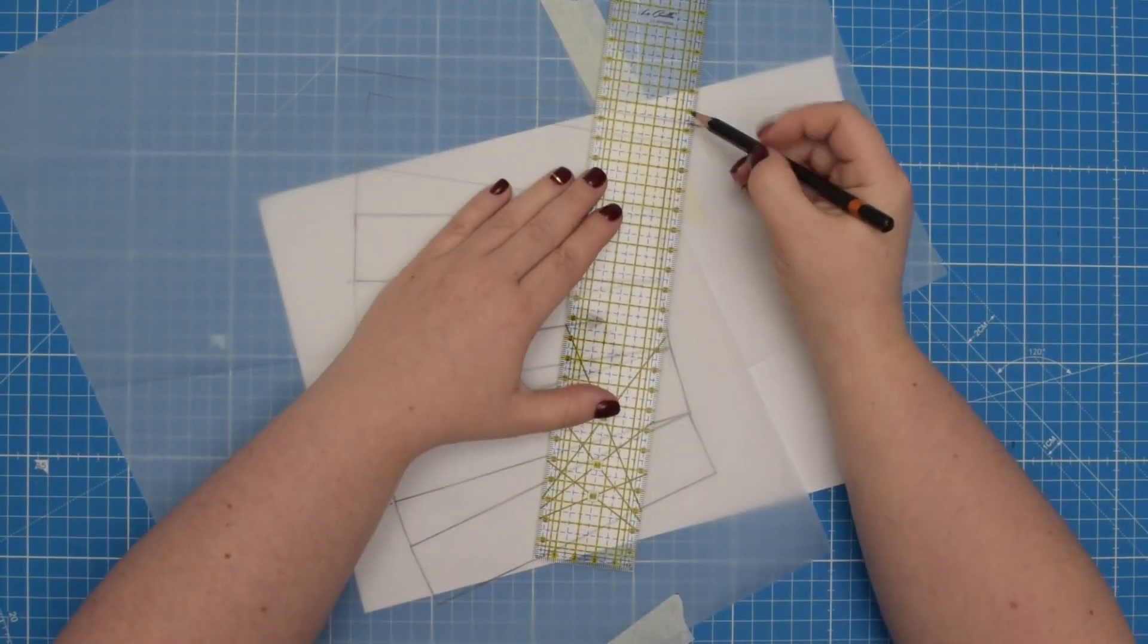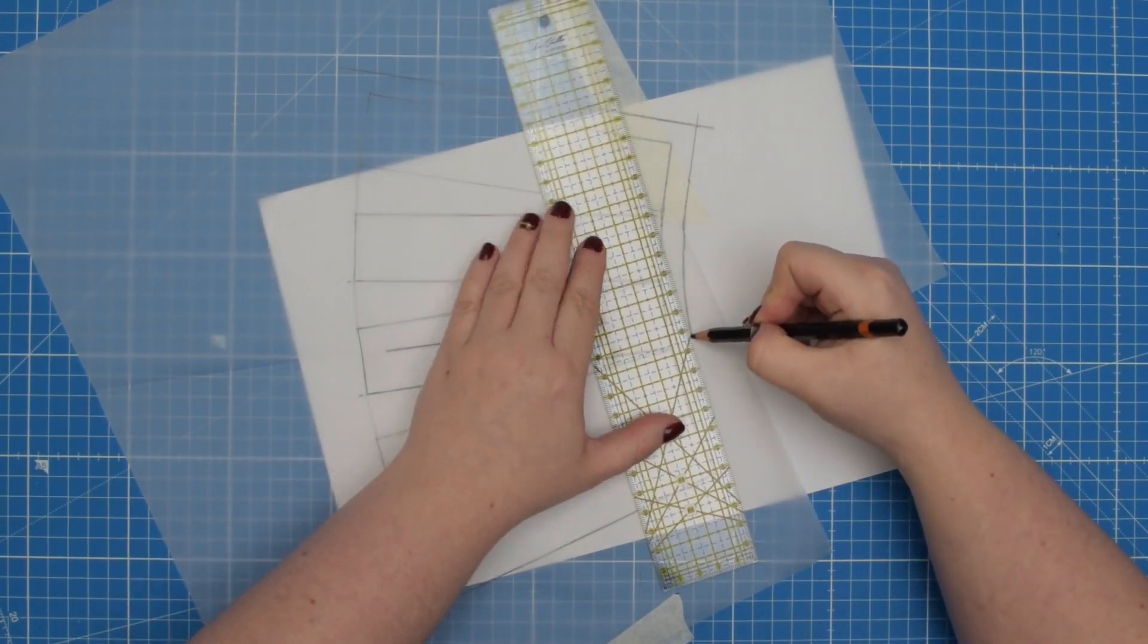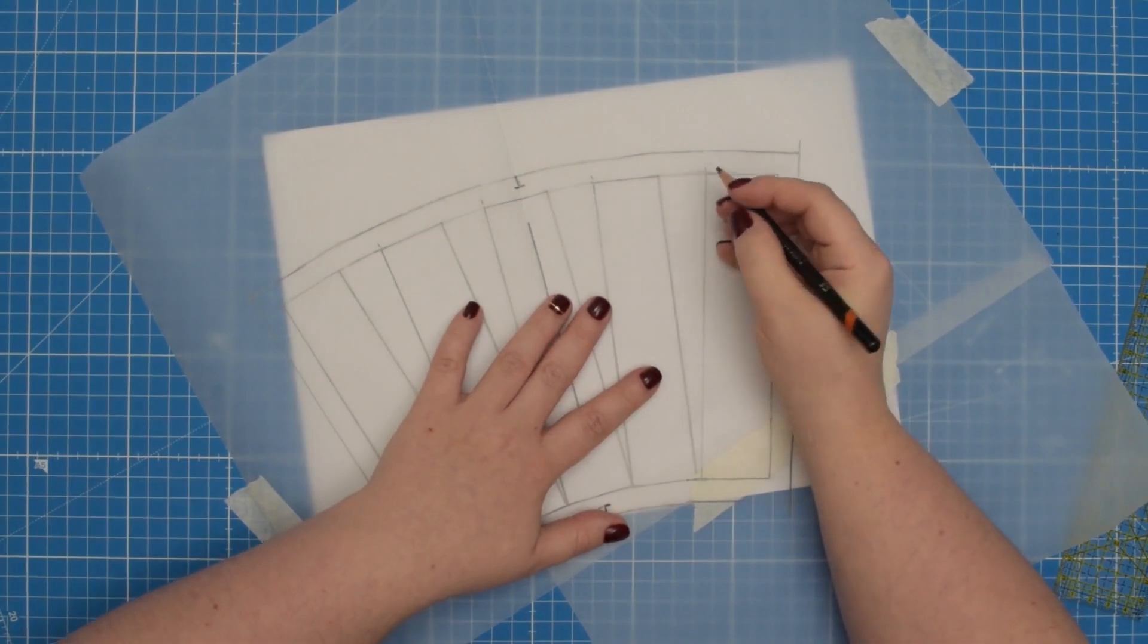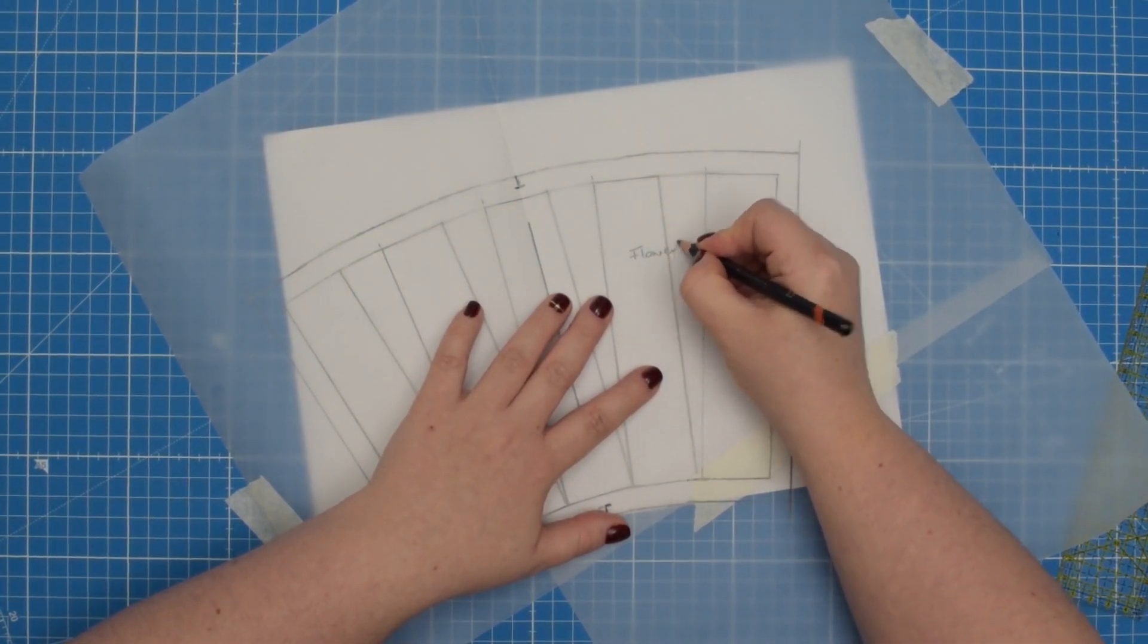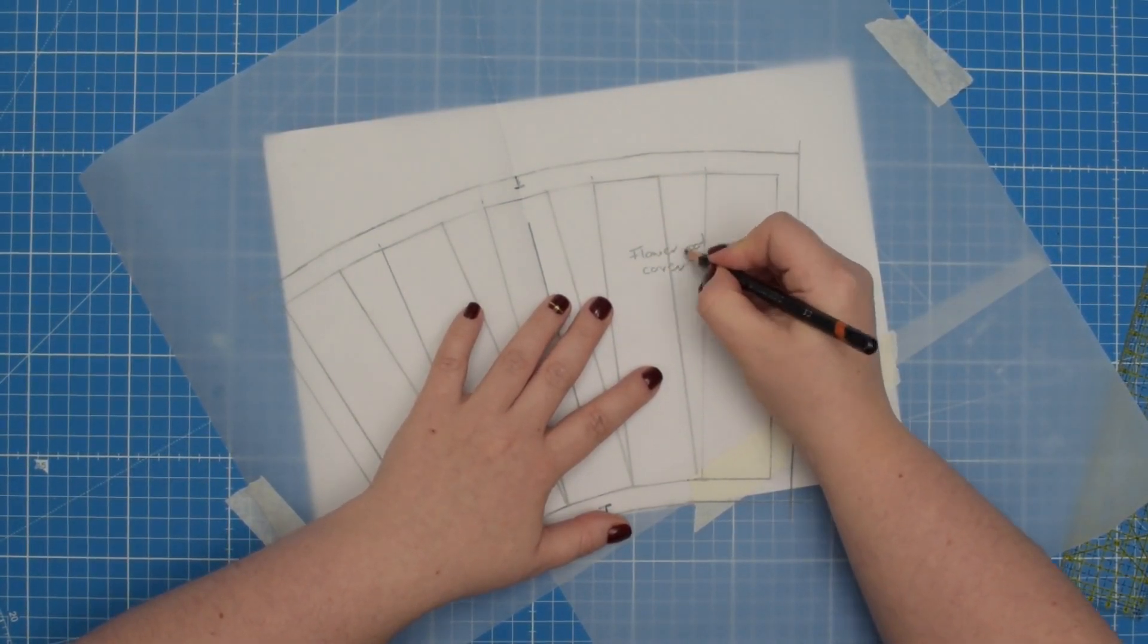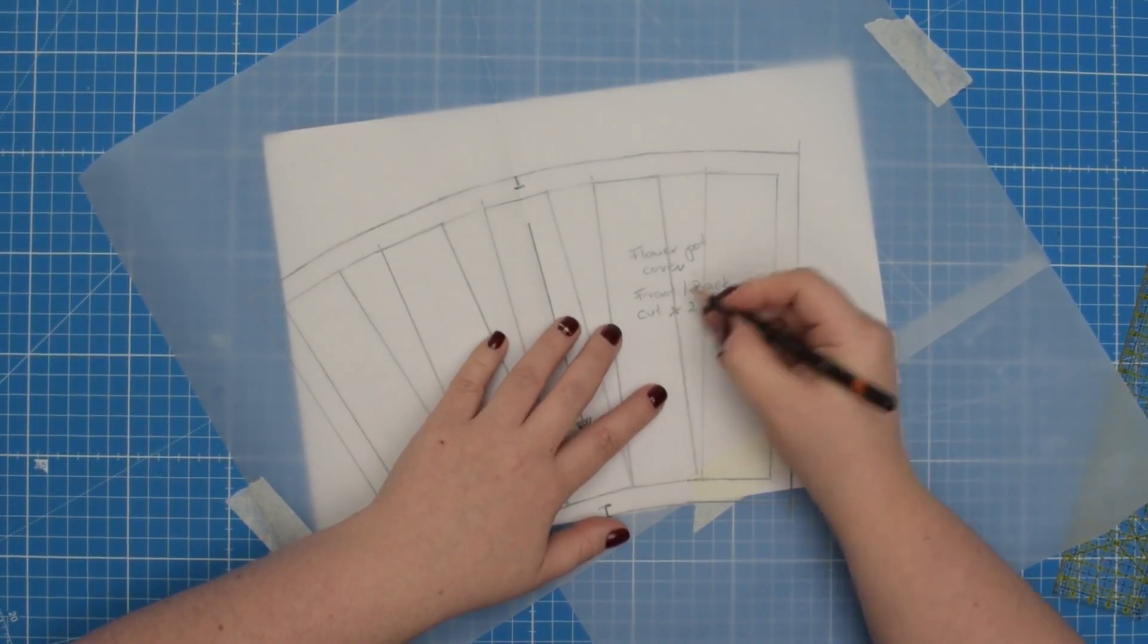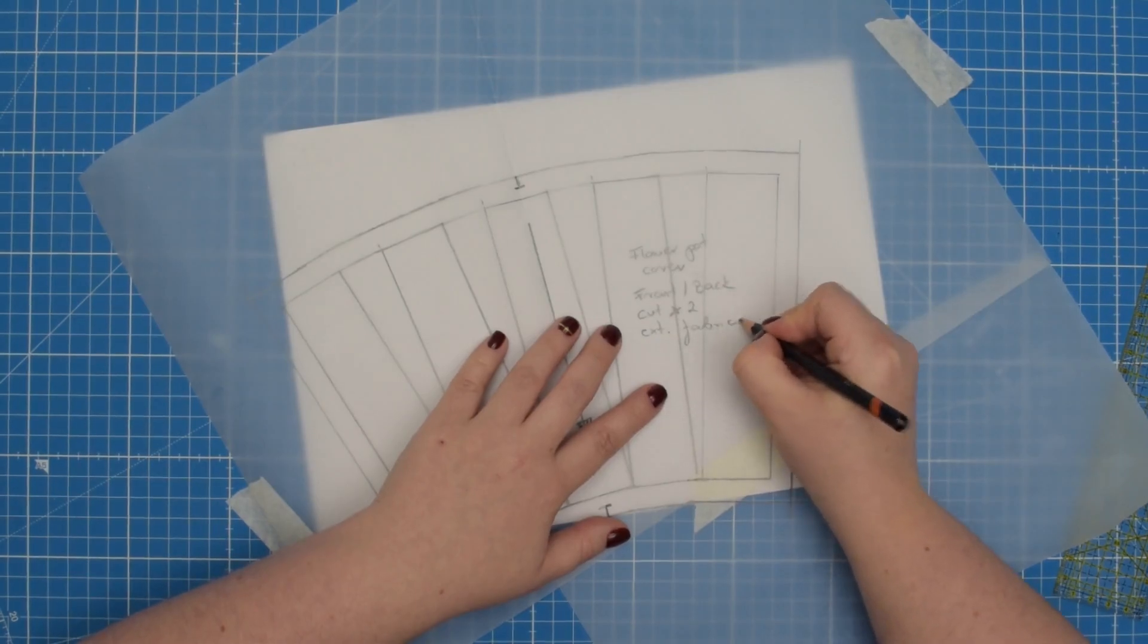When you are happy with everything go ahead and add your seam allowance. For me that's one centimeter. So this is the front and back pattern piece of your flower pot. So now we can label our pattern and then we're going to create a pattern piece for our base.